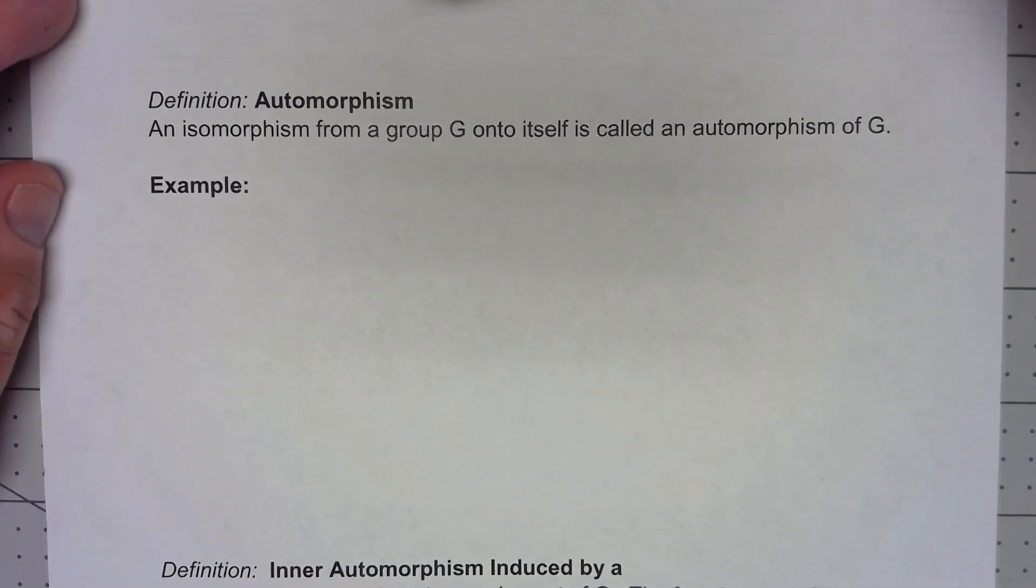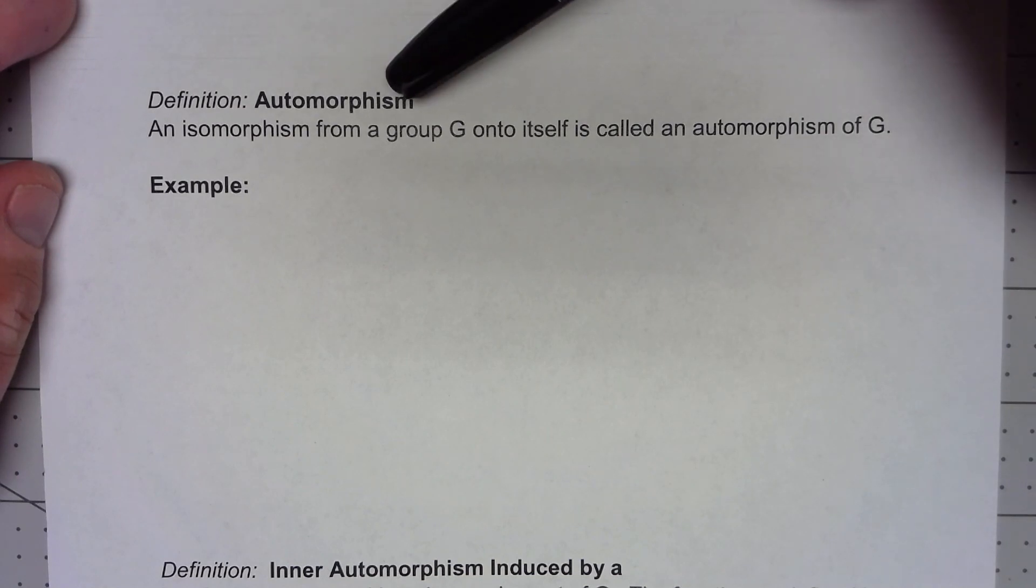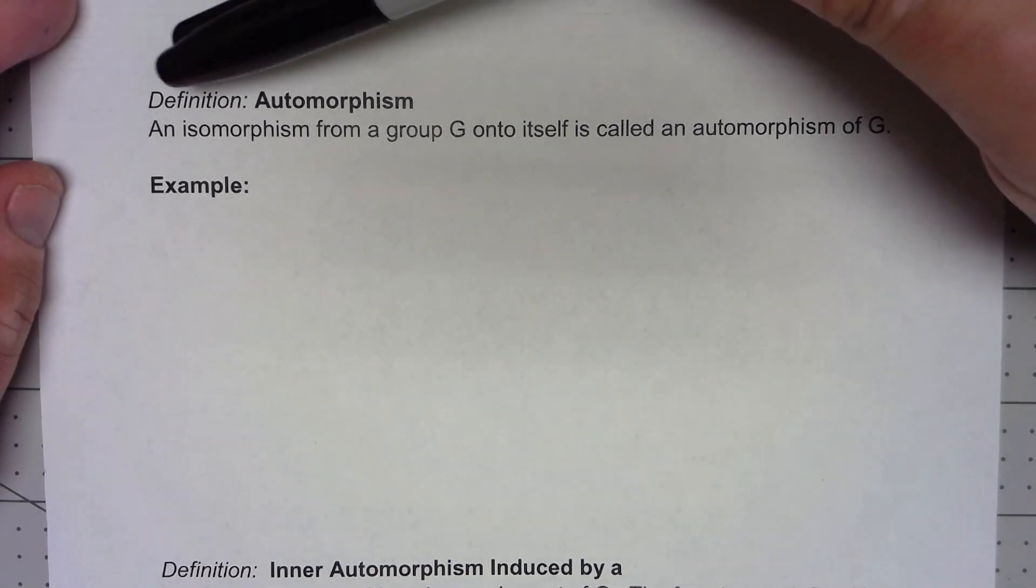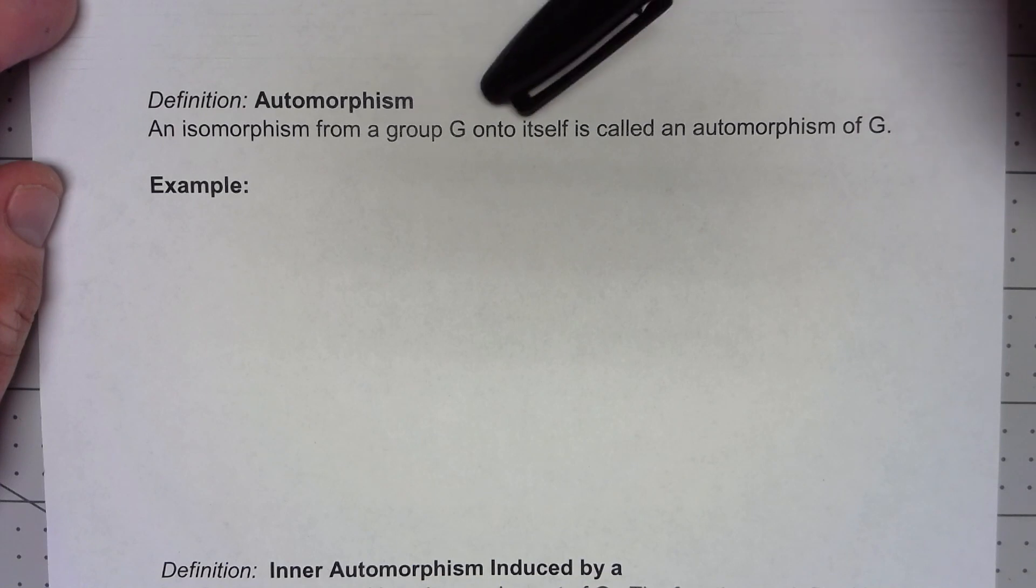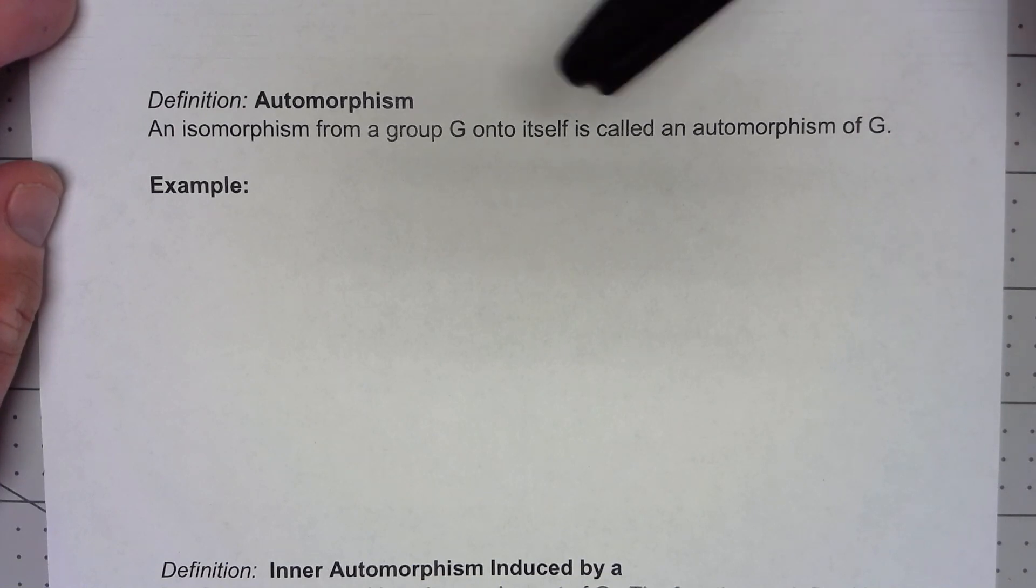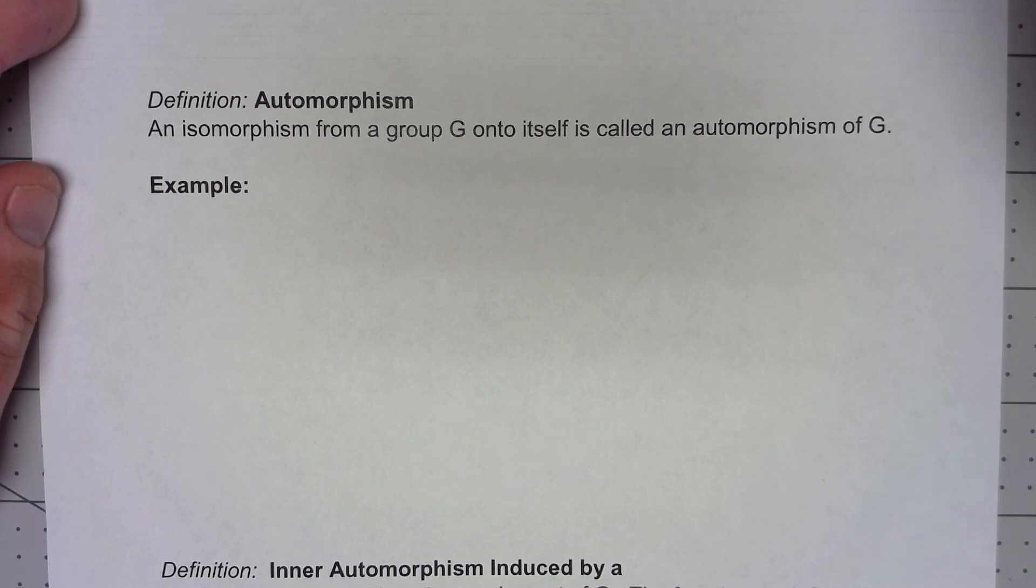Let's take a look at an important definition. We're going to say that an automorphism is an isomorphism from a group G onto itself. If you actually look back at the first video I did this week, 6.1, the very first example that I did of an isomorphism was in fact an automorphism. We took a function from a group onto itself and showed that that function was an isomorphism.